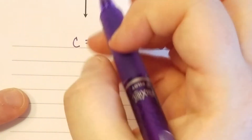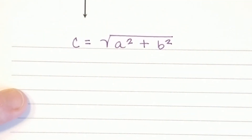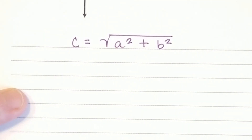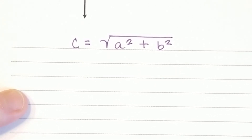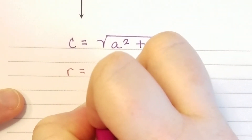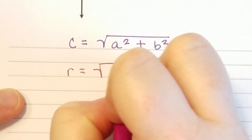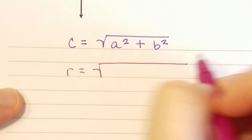So instead of c, I'm going to replace that with r. And then here I've got a squared plus b squared.